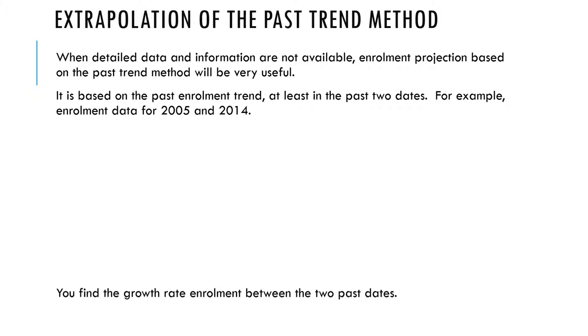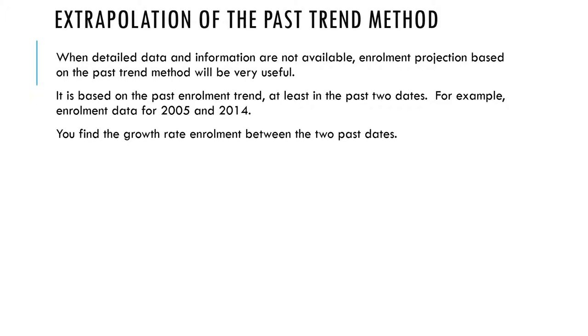So it means you just pick two dates. They may not be concurrent, but at least you have two dates. Then you find out the growth enrollment between the two dates. Then you look up again, extrapolate the obtained growth rate to obtain the future enrollment.